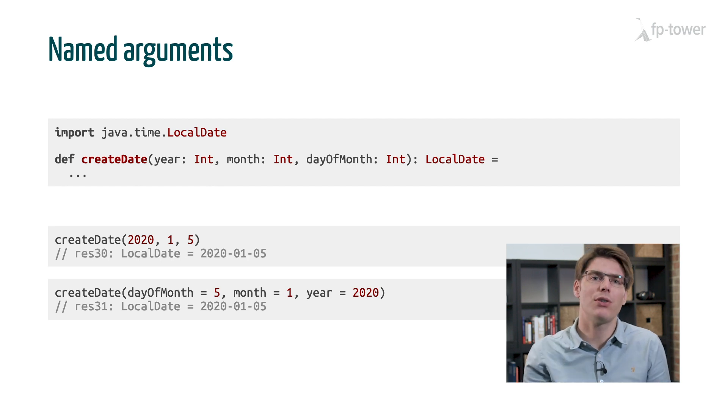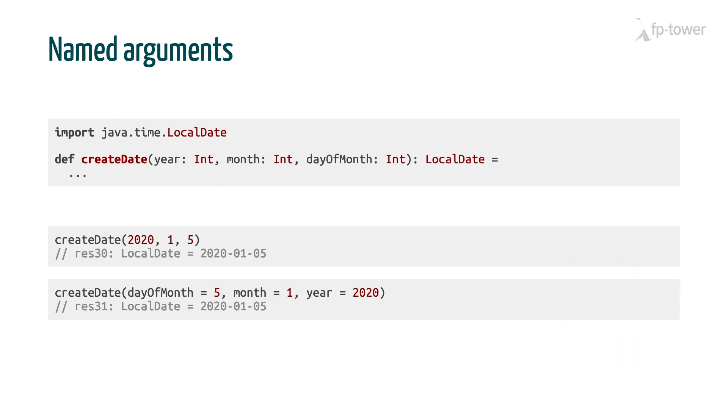Another benefit of the compiler knowing the names of the inputs is that we can call a def function using either the position of the arguments, or their names. For example, here we call createDate by first specifying the day of the month, even though it is the third argument of createDate. As long as we name the argument, we can use it in any position. And it's particularly convenient when a method takes several inputs of the same type, or if we use a non-informative type like boolean, as it helps to give some context to the expected input.